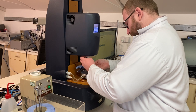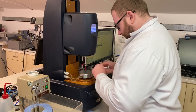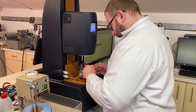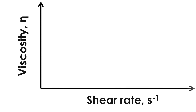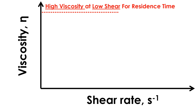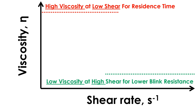Viscosity profiling enables characterisation of materials under a well-defined range of shear conditions. Under low shear conditions, or zero shear, a high viscosity will help maintain persistence of the tear film. However, during high shear events such as during blinking, a high viscosity will be perceived as draggy, and can also lead to blurry vision and foreign body syndrome.